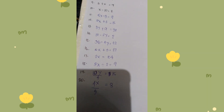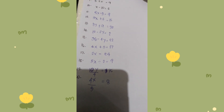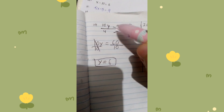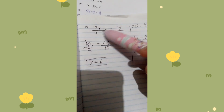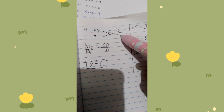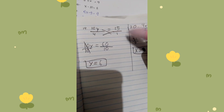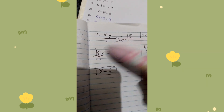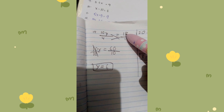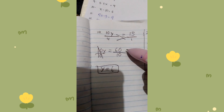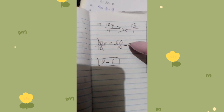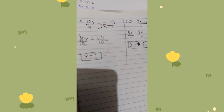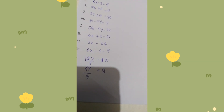Number 19: 10y divided by 4 is equal to 15. Cross multiplication: 10y times 1 equals 15 times 4 — always remember a whole number has a denominator of 1 — so 10y equals 60. Divide both sides by 10, so y equals 6.